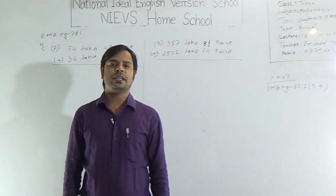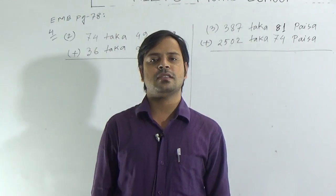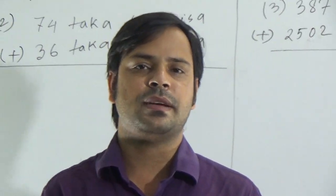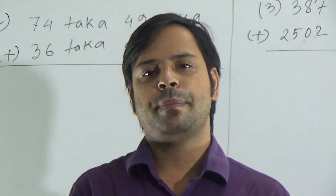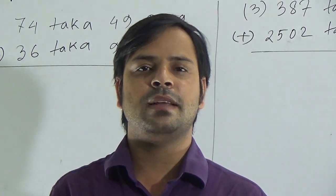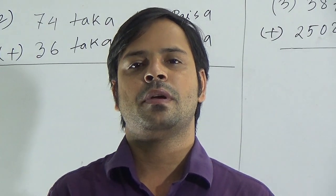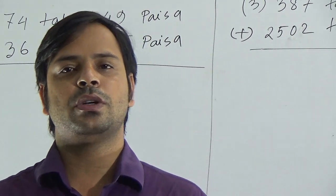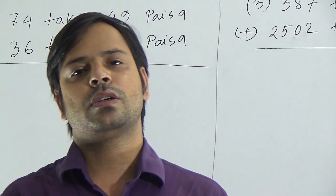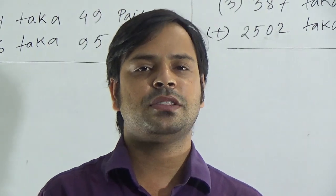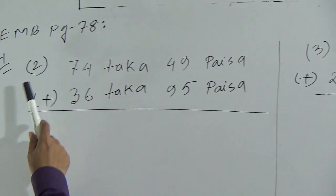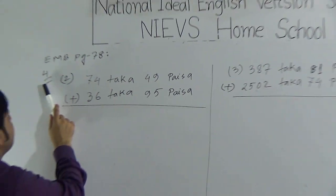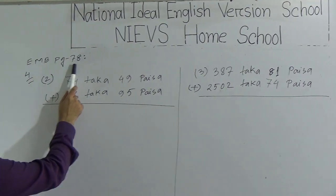Dear students, today I am here to conduct a math class of class 3. Our today's topic is Chapter 7, EMB page 78. EMB page means Elementary Mathematics Book, page 78. From Activity 2, we will solve two questions. Questions are 2 and 3. Question 2 and 3 from Activity 4, page 78.